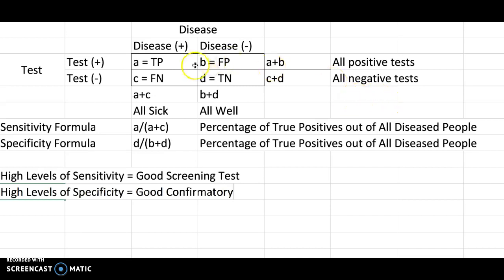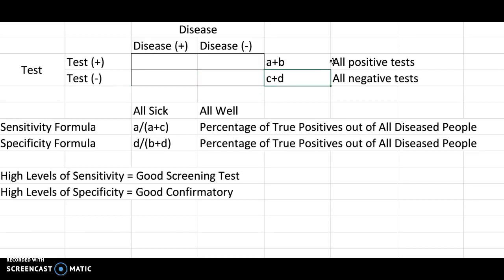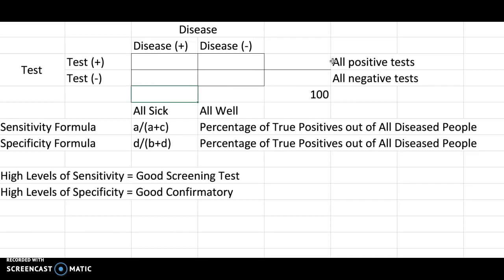Let's go ahead and set up an example. I'm going to put in real values for all of these spaces and give you a real example of what this might look like. Let's say the total population is 100 people. Of those 100 people, we know for a fact that 25 people are sick, which means we know that 75 people are well.